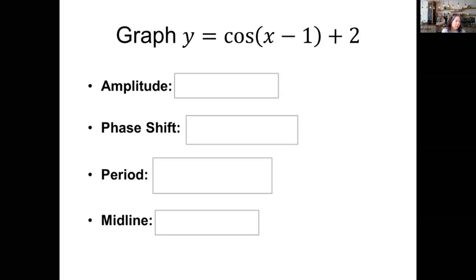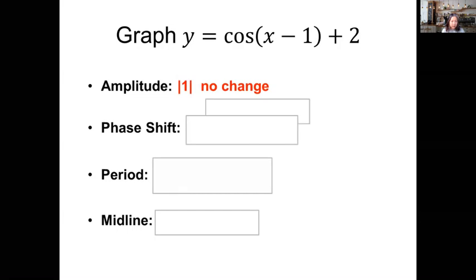Let's do one example. The transformed equation is y = cos(x − 1) + 2. This one is easy because the b value involving the period is one. Let's identify all key features by recognizing the a, b, c, and d values. For amplitude, there is no specific number in front of cosine, so there is an invisible one, making the amplitude the absolute value of one — no change from the parent function. For phase shift, the point shifts one unit to the right.